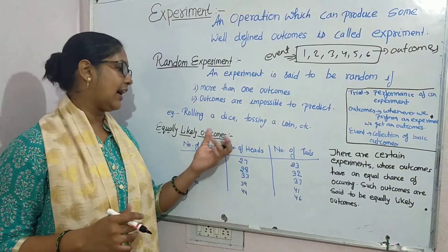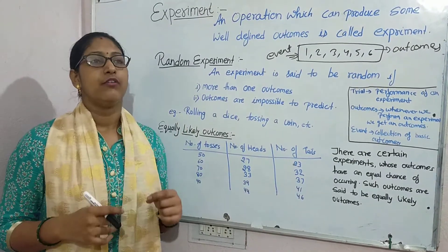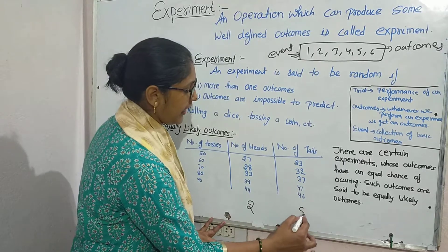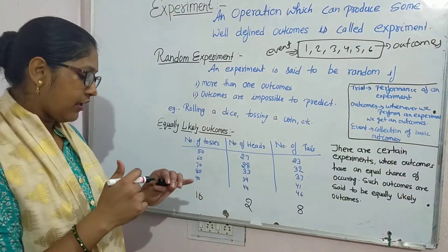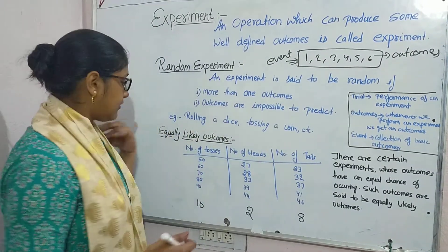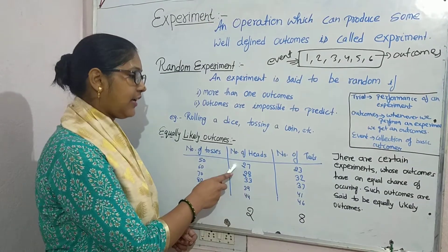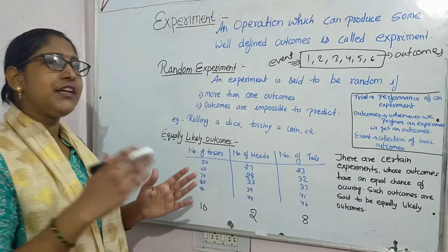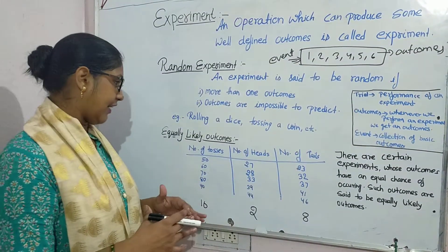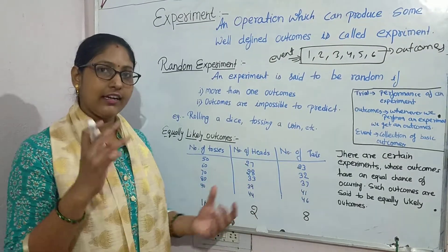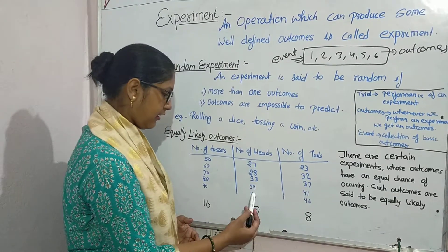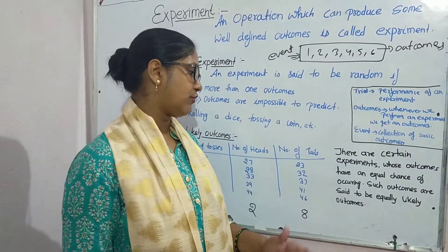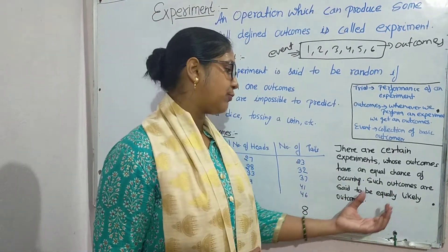The next term is equally likely outcomes. To understand this, we take an example. We are tossing a coin. Suppose we toss a coin 10 times — we get 2 times heads and 8 times tails. When we increase the number of tosses to 50, we get 27 heads and 23 tails. When tossing 60 times, 28 heads and 32 tails. As we increase the number of tosses, the difference between number of heads and tails is decreasing — from 6, to 4, to 4. There are certain experiments whose outcomes have equal chance of occurring, and such outcomes are said to be equally likely outcomes.